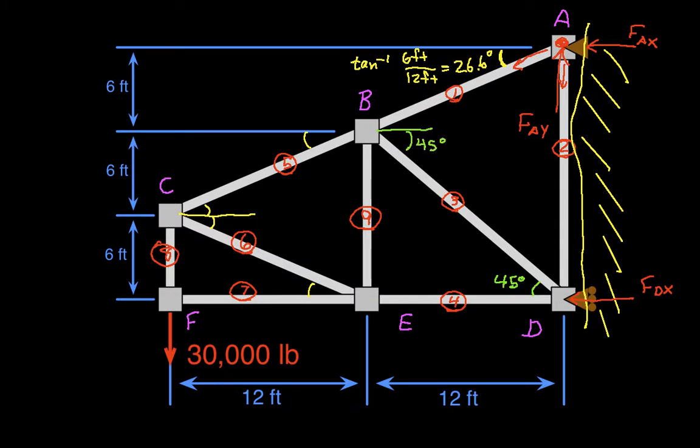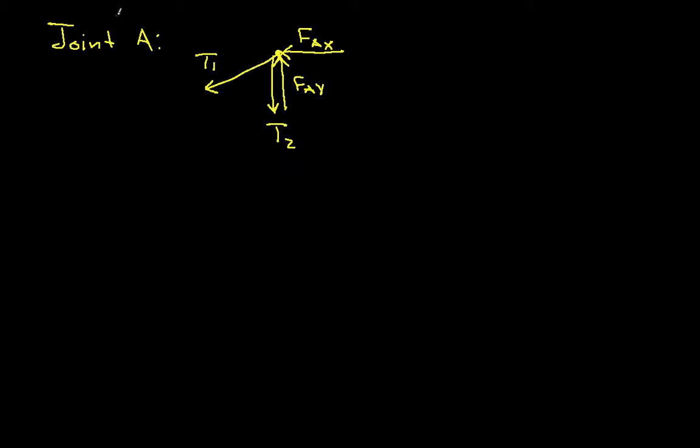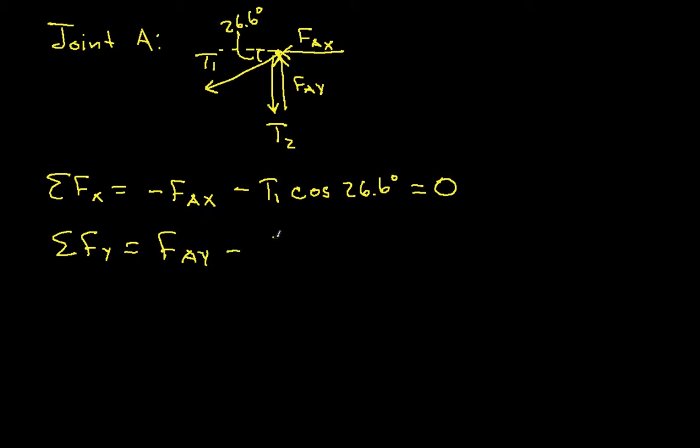Okay, so with this, we can now go back and actually write out our set of equations that we'll get from joint A. If we look at the sum of the forces in the X direction, we have minus FAX minus T1 cosine 26.6 degrees, because this angle here is 26.6. And that's all the horizontal forces, so we can set this equal to 0. We know what FAX is, so T1 is actually the only unknown in this equation. The summation of FY, we have then FAY minus T2 minus T1 sine 26.6 degrees. And that's equal to 0.